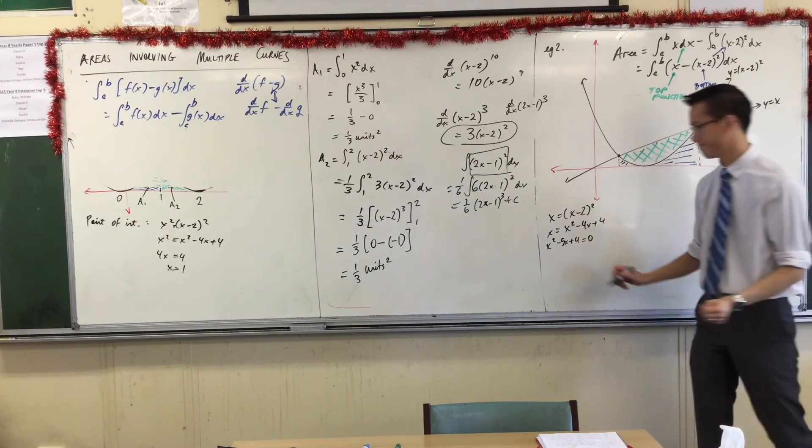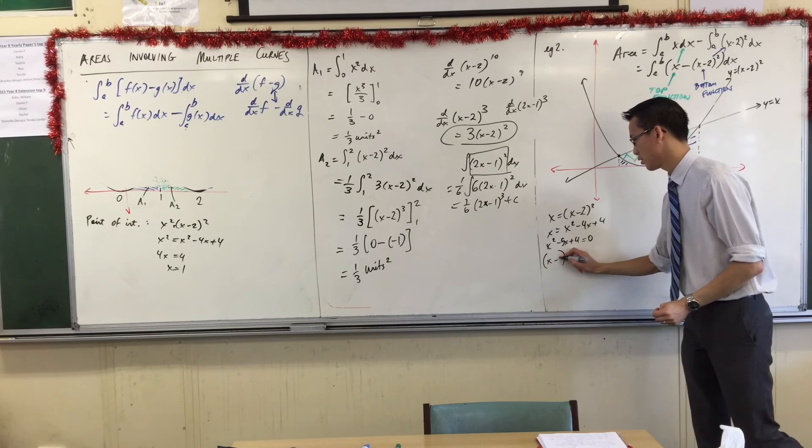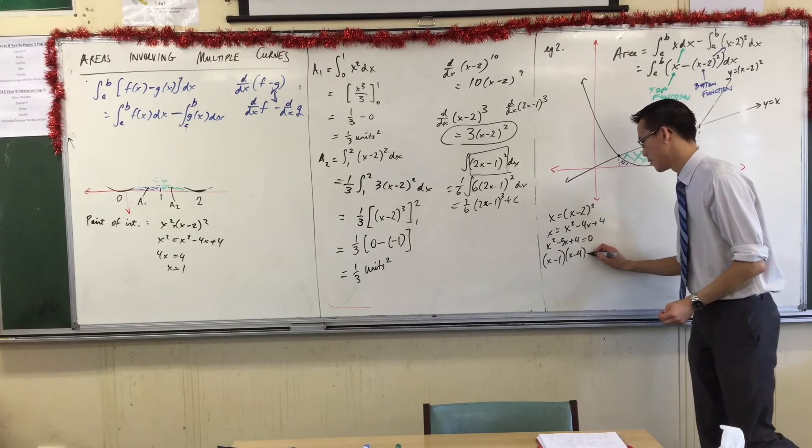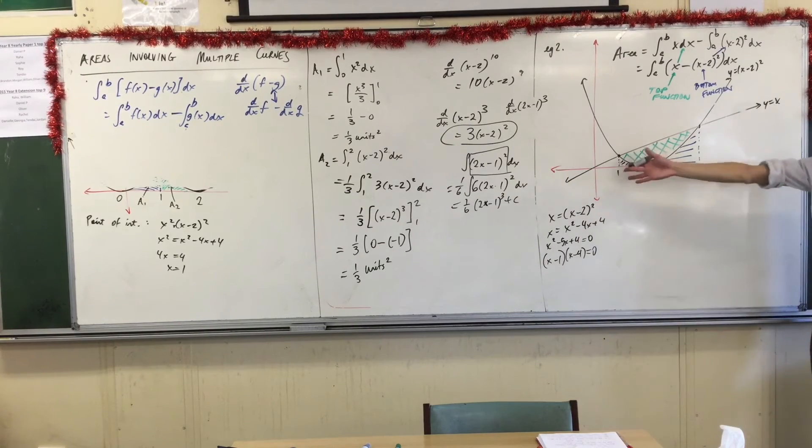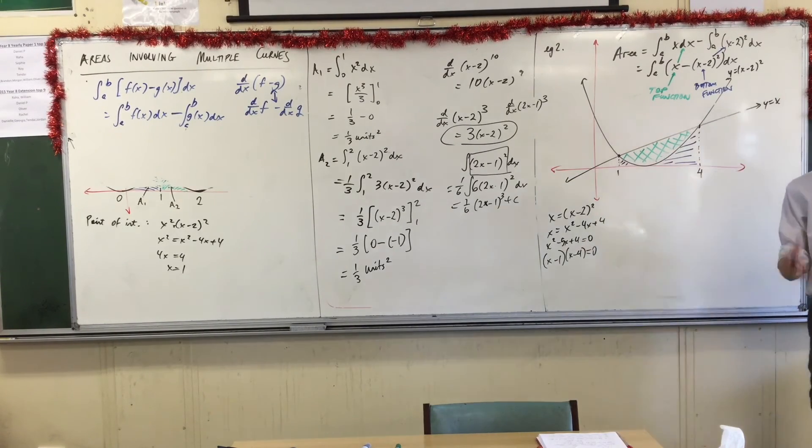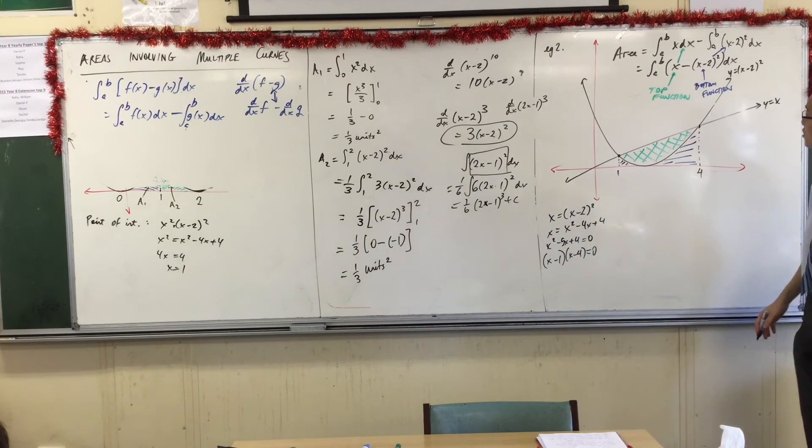Negative 4, negative 1. Nice, easy numbers for you. 1 and 4. So, there's my a and there's my b. Now, I'm ready to evaluate this integral. So, this is nice, because having dealt with 2, I can combine them into 1. So, I can just say area. I don't need to say a1 or a2 anymore. The area is from 1 to 4.